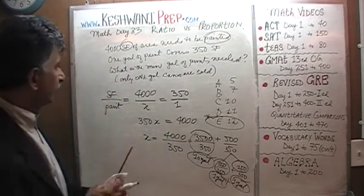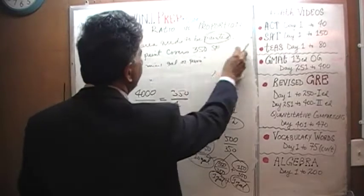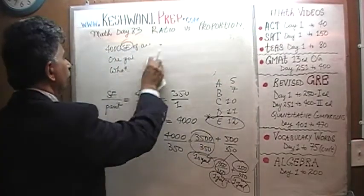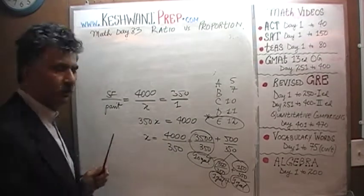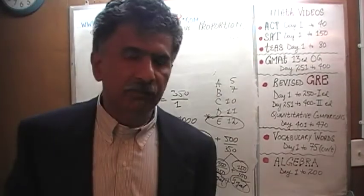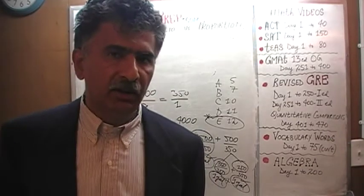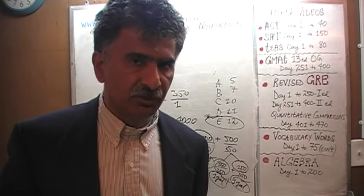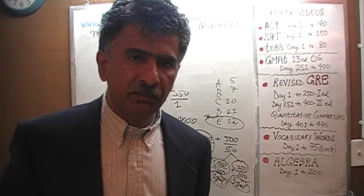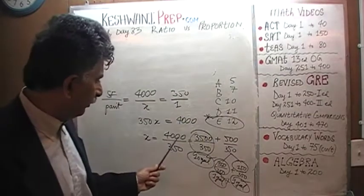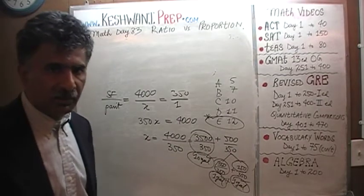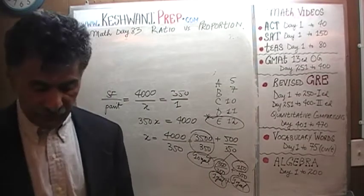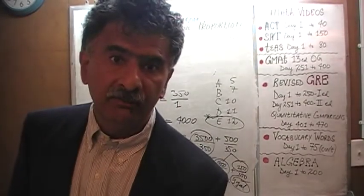It's always a good idea to do the problems in a logical, intuitive way, as opposed to simply doing it with a calculator or doing it mechanically — just dividing 4,000 by 350 and ending up with fractions and decimals. Just keep it simple. Here you can clearly see we still have 150 square feet left unpainted.